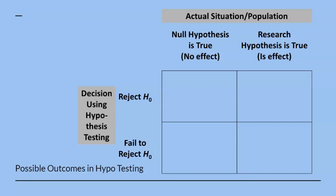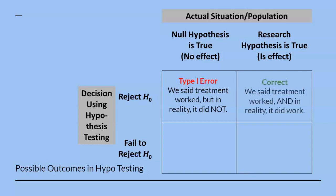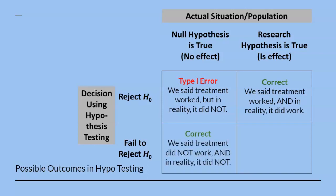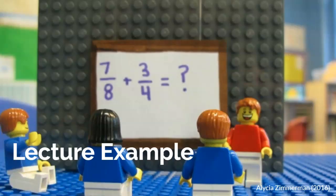Now that we've reviewed the two decision errors that occur in hypothesis testing, let's put this all together in the diagram we used before for the pumpkin pie analogy. The type 1 error occurs when we said the treatment worked, but in reality the treatment did not work. The decision we made is correct when we said the treatment worked, and in reality the treatment did work. We made a type 2 error when we said the treatment did not work, but in reality the treatment did work.